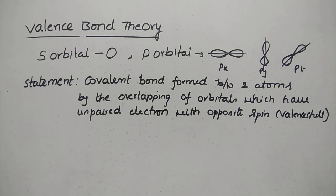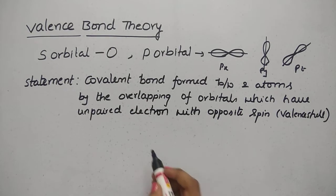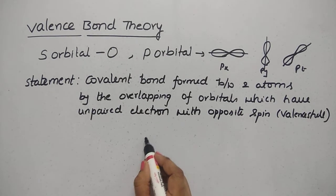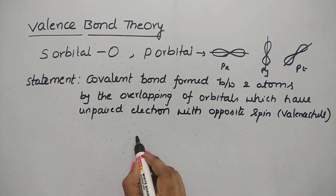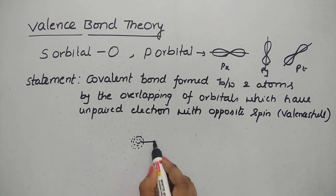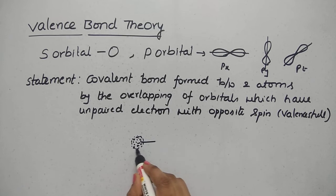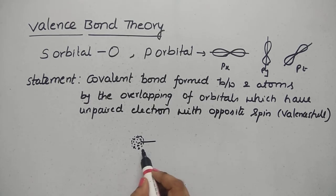Before going to explain valence bond theory, you have to know about what is an S-orbital, P-orbital, and so on. An orbital is a region of space where there is equal probability of finding an electron. You can find more density of electrons — that is, the maximum electron density — within an orbital.